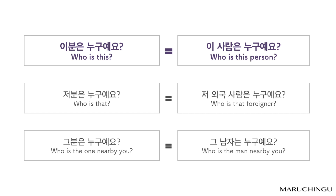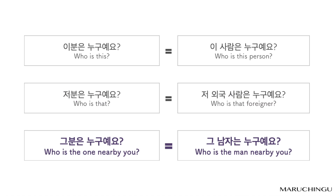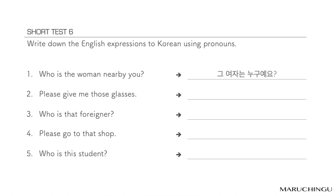이 사람은 누구예요? 저분은 누구예요? / 저 외국 사람은 누구예요? 그분은 누구예요? / 그 남자는 누구예요? Short test six: write down the English expressions in Korean using pronouns.